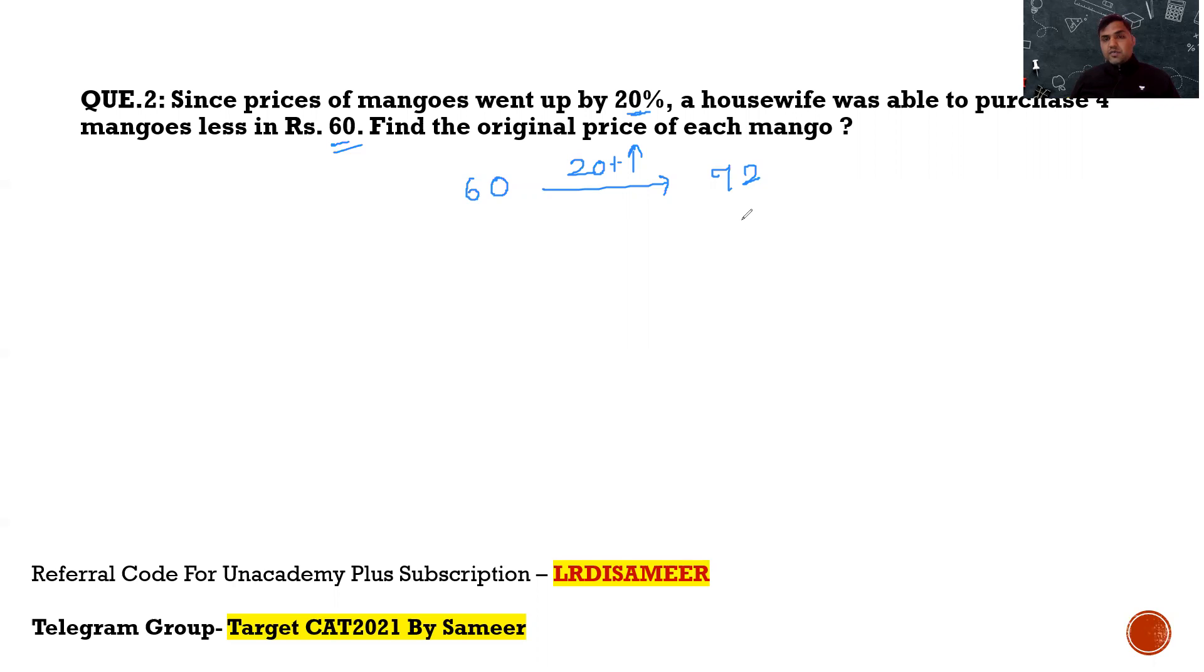If the new price is Rs. 72, that means, can I say that you are getting 4 less mangoes because of this Rs. 12? If you would have these Rs. 12 in your pocket, you would get these 4 mangoes. So, can I say 4 mangoes cost price is now Rs. 12? One mango purchase price will be 3. And this price is 20 percent more than the previous price. So, whatever is the old price, it gets increased by 20 percent and you got the new price as 3. So, the old price would be 3 upon 1.2, that is 2.5. So, Rs. 2.50 is the original purchase price. That's the answer of the question.